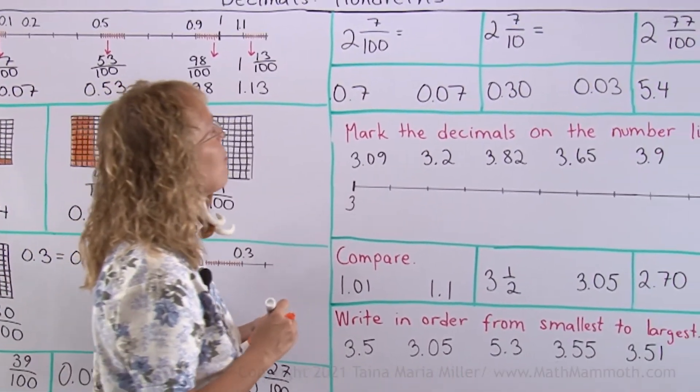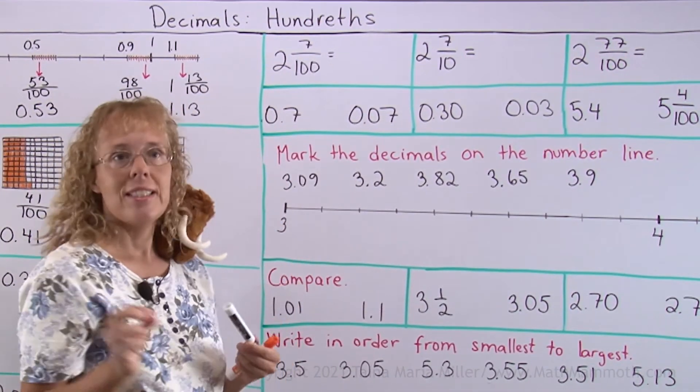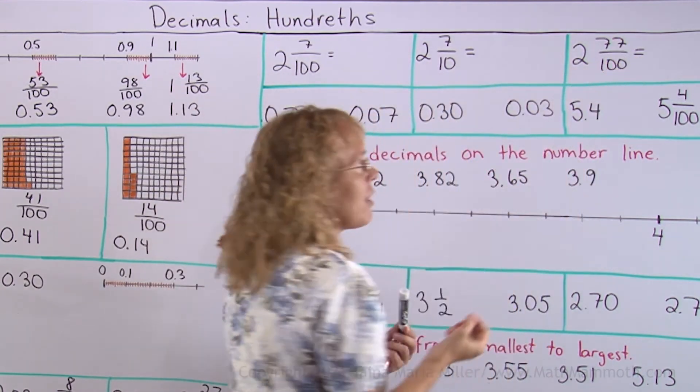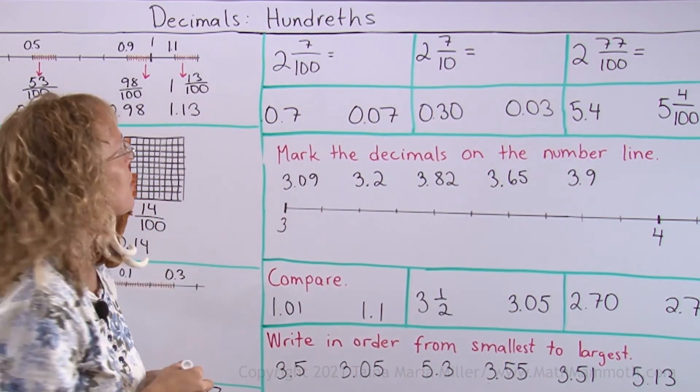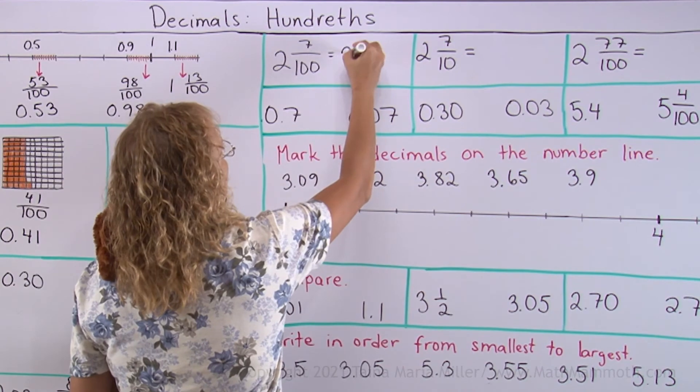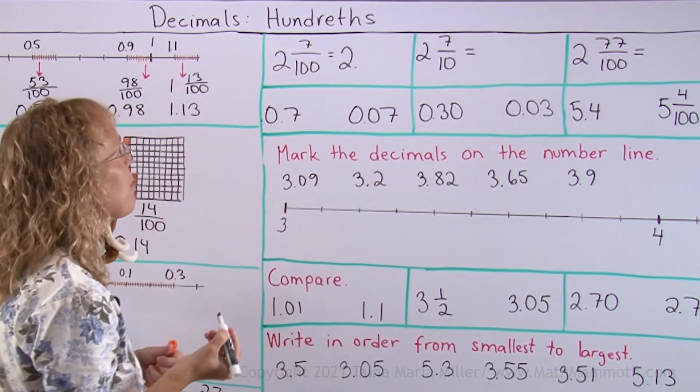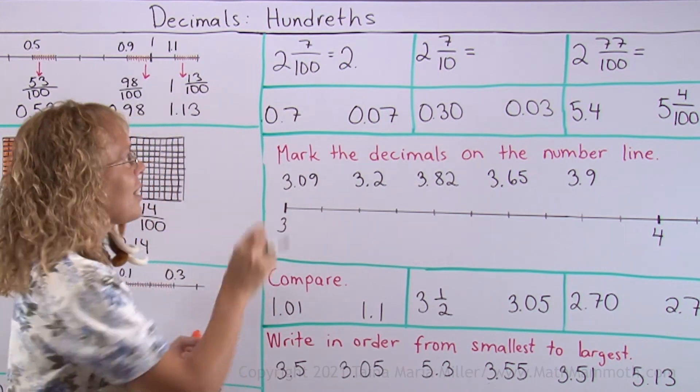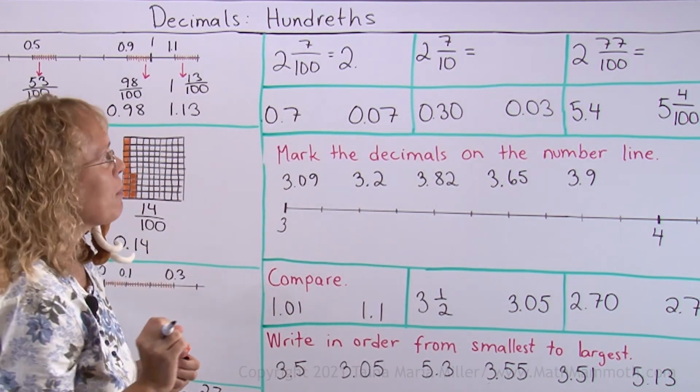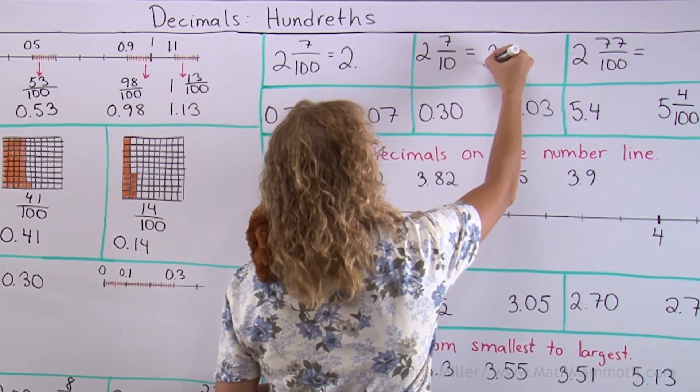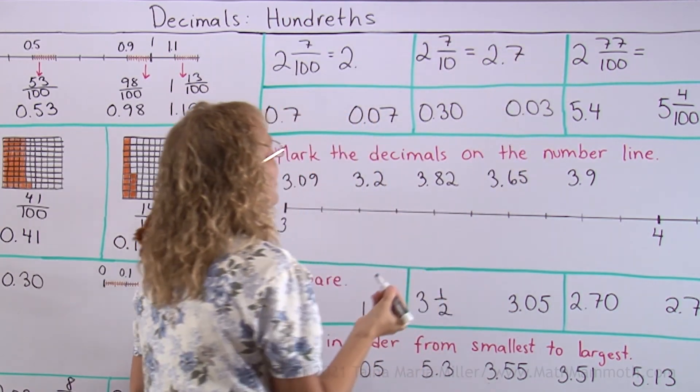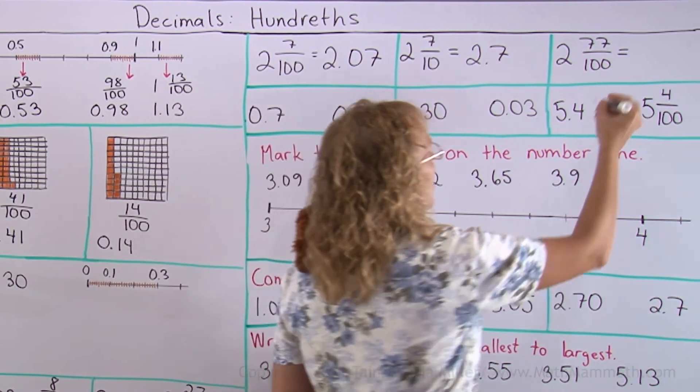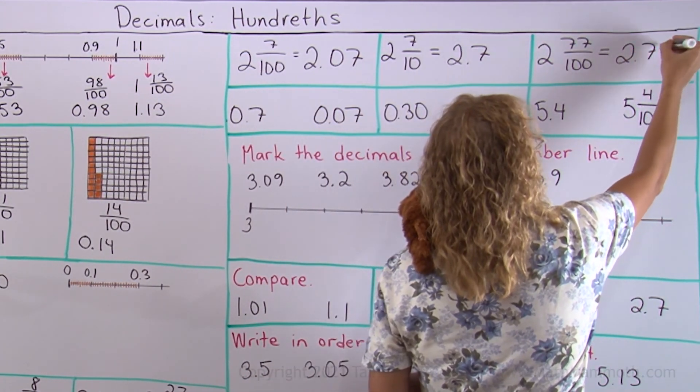Let's go on some more. Here's a fraction. 2 and 7 hundredths. Here's 2 and 7 tenths. 2 and 77 hundredths. And we'll write those as decimals. Okay, my whole number part is the same. Now 7 hundredths. Sometimes students make the mistake of just writing 7 there. 2.7. But see, that would be the answer to this one. 2.7. So this is different. It is 2.07. Like that. And here we get then 2.77.